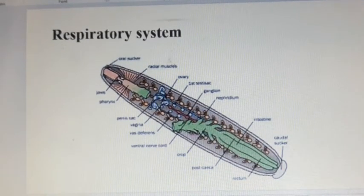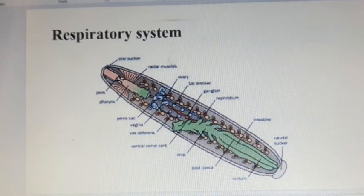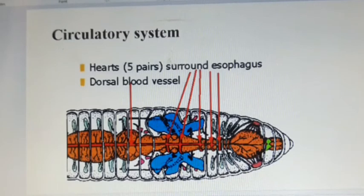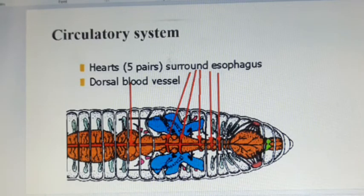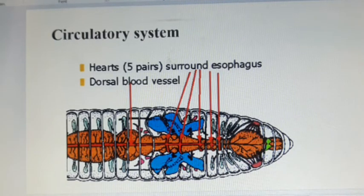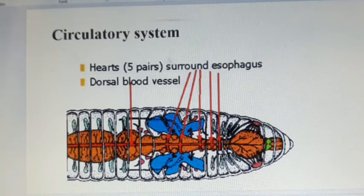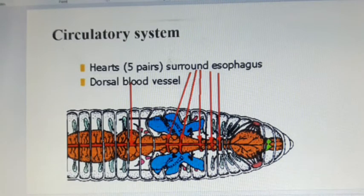Leeches exchange gases across the body wall. Some leeches retain the basic annelid circulatory pattern. But in most leeches, its circulatory pattern is highly modified and coelomic sinuses replace vessels. Coelomic fluid has taken over the function of blood and except in two orders, respiratory pigments are lacking. Respiratory pigments are oxygen-carrying compounds.